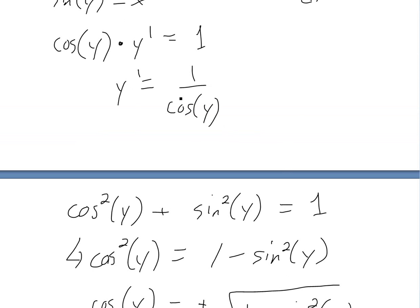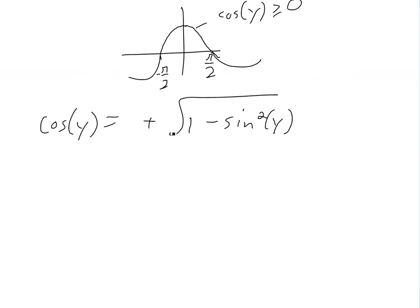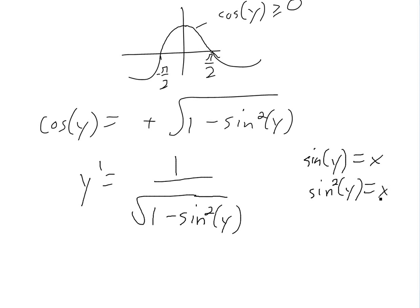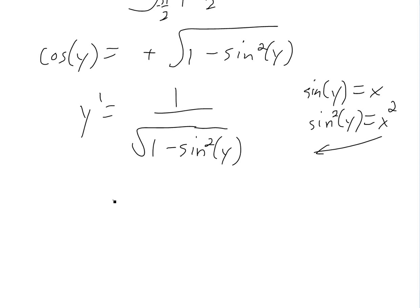So then we just plug this in here. We're going to have y prime is equal to 1 over square root of 1 minus sine squared y. But then if you saw that earlier, basically from definition of inverse we had sine y is equal to x. So if we squared these both we're going to have sine squared y is equal to x squared. And we just plug this in there. So we're going to get y prime is equal to 1 over square root of 1 minus x squared.